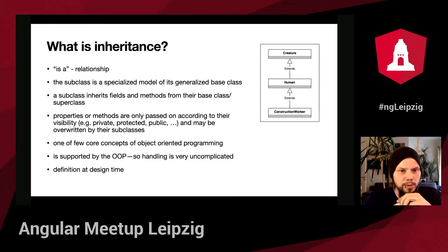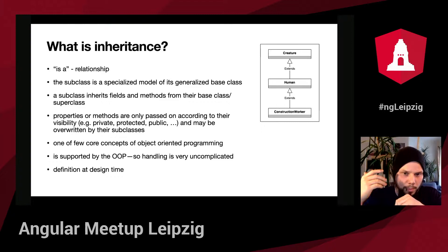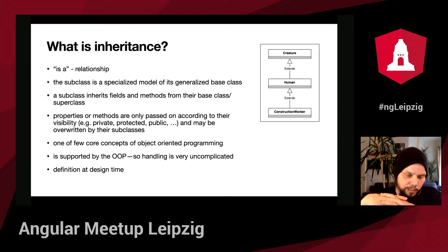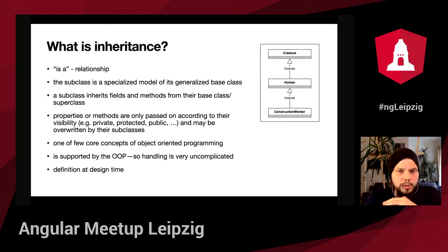A subclass is a specialized model of a generalized base class. The human is a specialized creature — we've got arms, a head, legs, a stomach, and so on. A subclass inherits fields and methods from its base class and super class, but not all fields or methods are inherited. You can change this behavior with visibility modifiers — private, protected, public — and you can override these in your subclasses. Inheritance is one of the most famous core concepts of object-oriented programming. It's very uncomplicated and easy to handle, and these days every programmer knows inheritance.